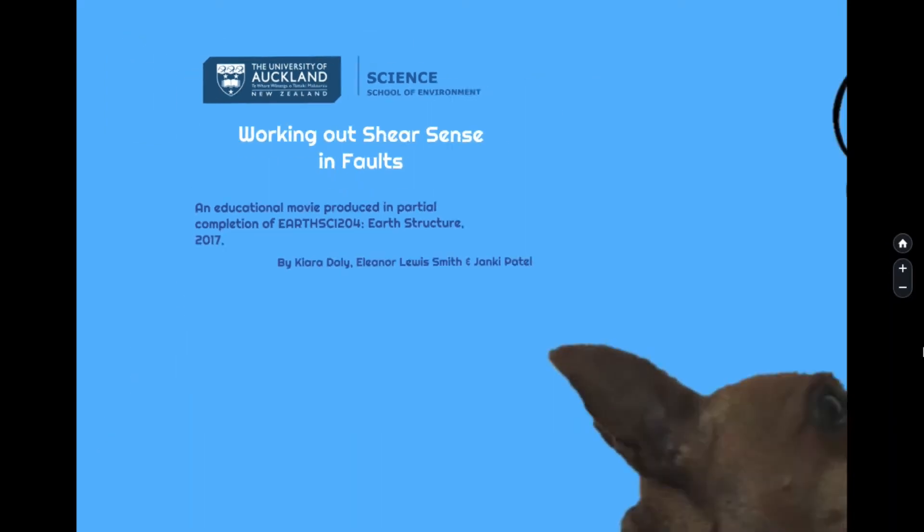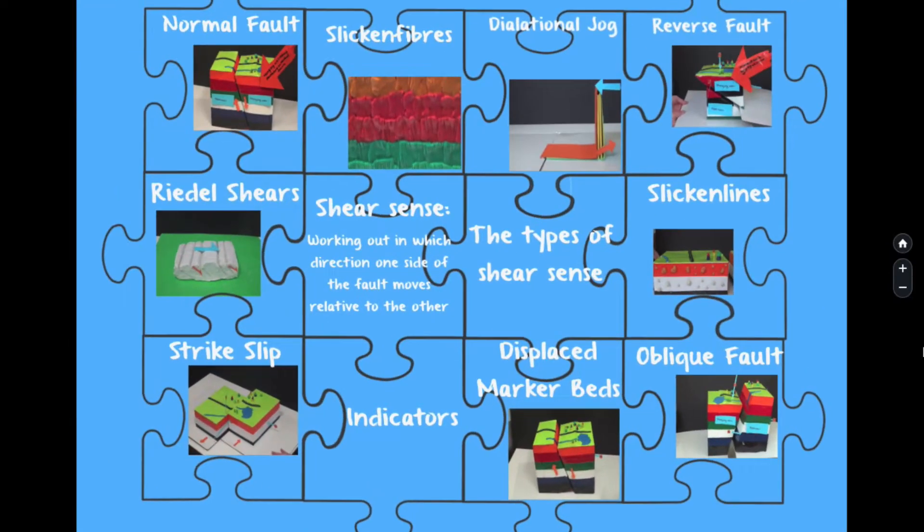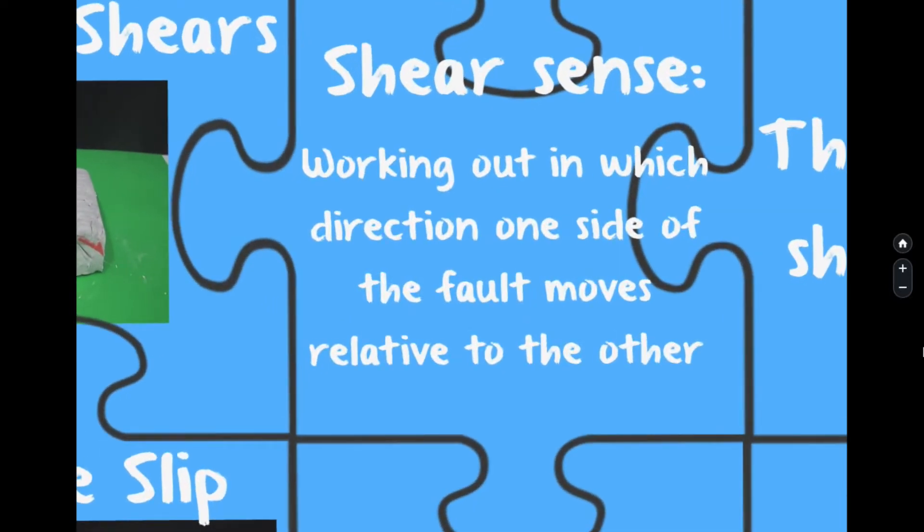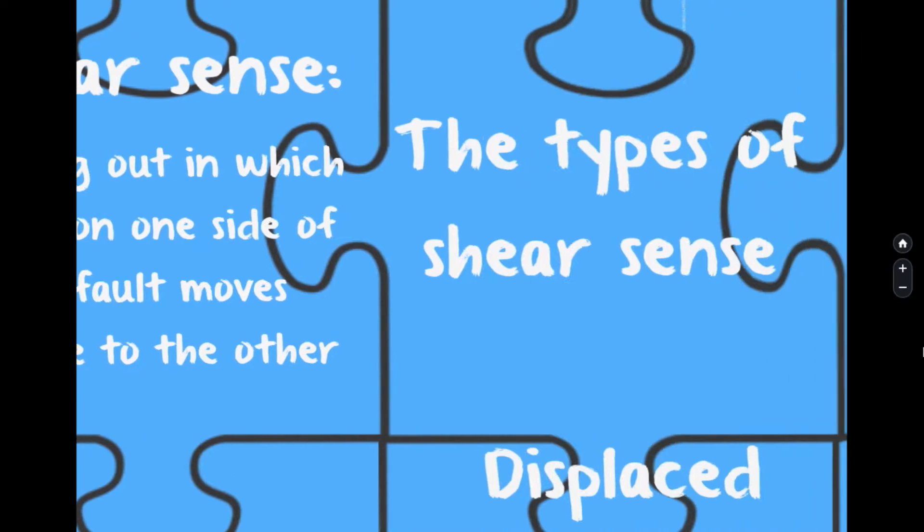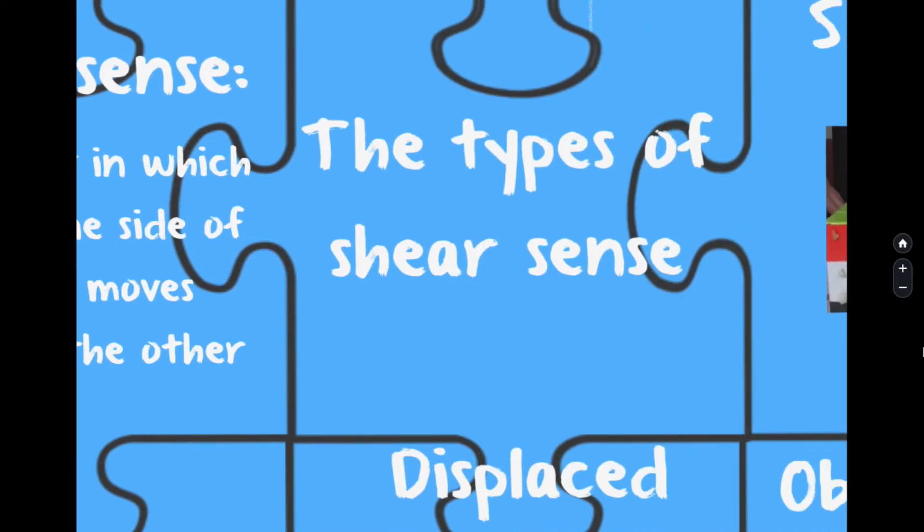Working out the shear sense in faults is like putting together a puzzle. To shear is for two rocks to move against each other. To find out the shear sense is to try and work out in what direction each of those rocks moved relative to each other. Let's start building this puzzle by looking at the types of shear sense.